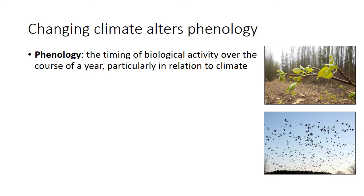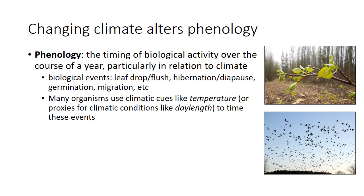Some examples of biological events that occur during the year and are timed at different periods include leaf drop or leaf flush, hibernation, coming out of diapause, germination, and migration. All of these events occur on a regular basis but there's usually some timing to them — they always occur at the same time of year. Many organisms use climatic cues like temperature, or proxies like day length, to time these events and make sure they're doing them when the environment is most suitable.